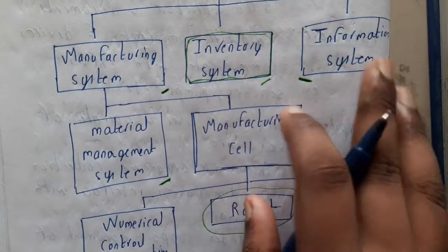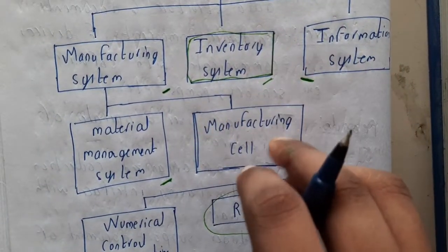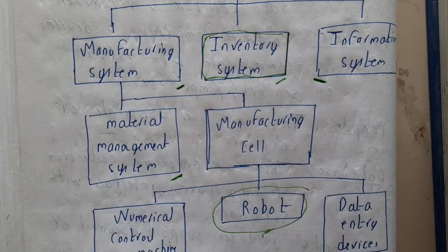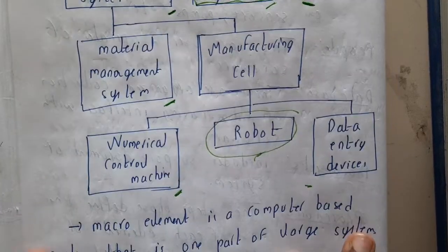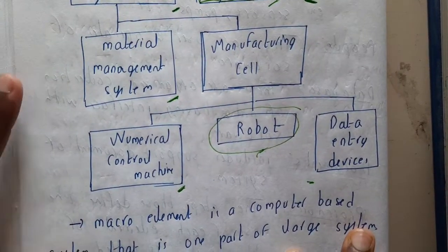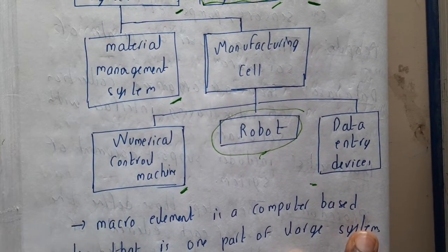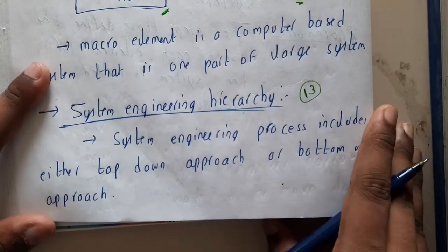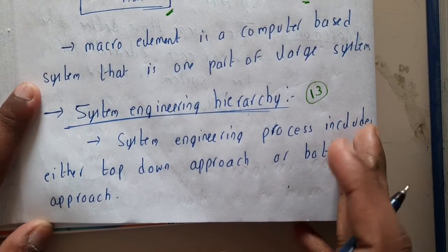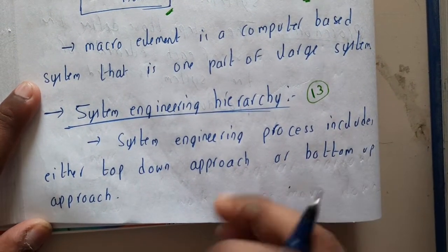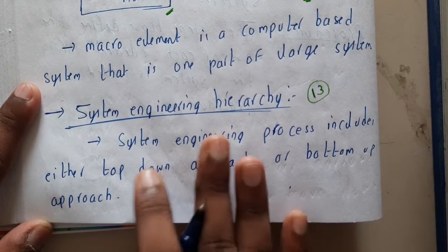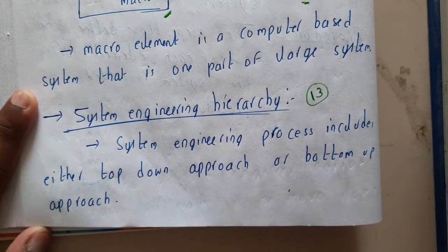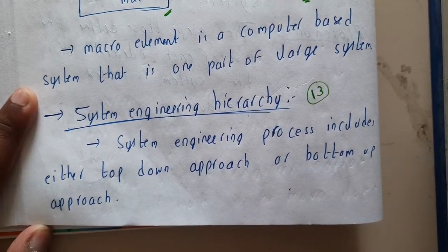A macro element is a computer-based system that is one part of a larger system. This whole structure is called a system, and when you do this for a particular engineering process, it is called system engineering. In the next lecture, we will go through the system engineering hierarchy — what is inside what. Thank you for watching.